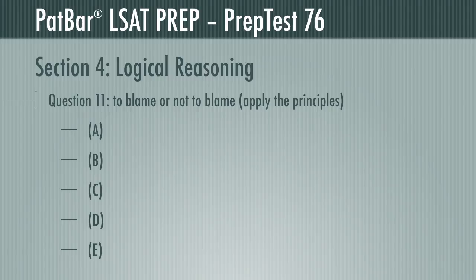Question 11 presents a set of principles: who should be blamed for misfortune and why, and who should not and why. You are to take the principles, assume they are valid — and this point is important: if you are told to assume something, you do so for purposes of the problem — and pick in which scenario those principles most justify the reasoning.